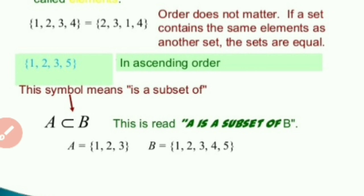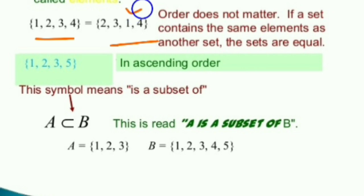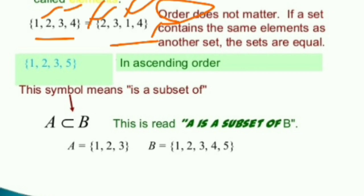One more type is an equal set. Equal means, for example, there are two sets. If the first set has elements 1, 2, 3, 4 and the second set also has elements 1, 2, 3, 4 — the same elements are present in both sets. Therefore we say both sets are equal. Here order does not matter, but the elements are very important — if both sets contain the same elements, they are equal.